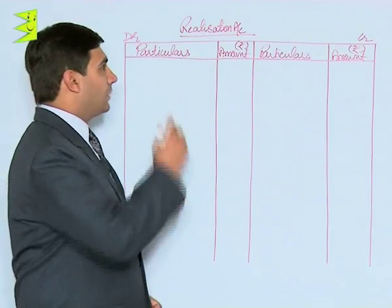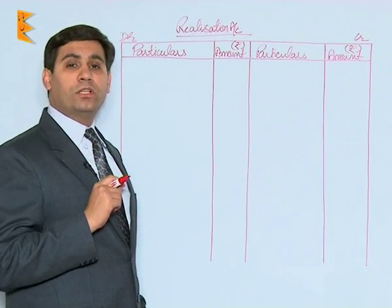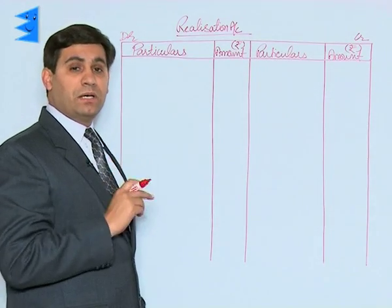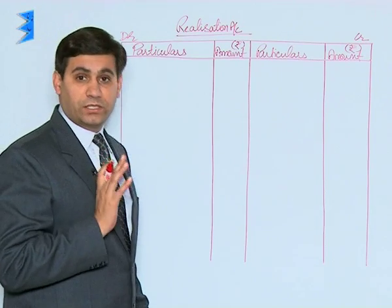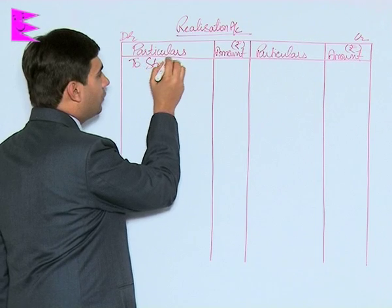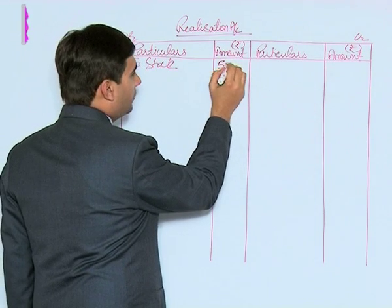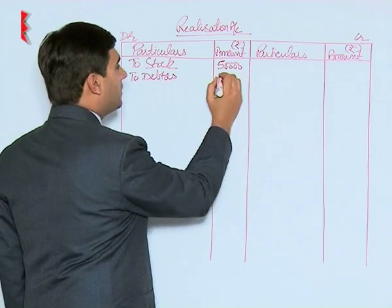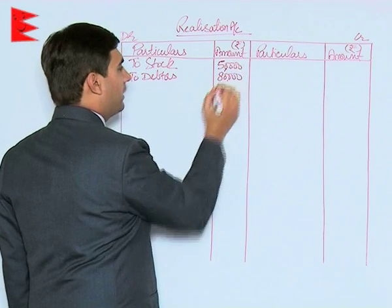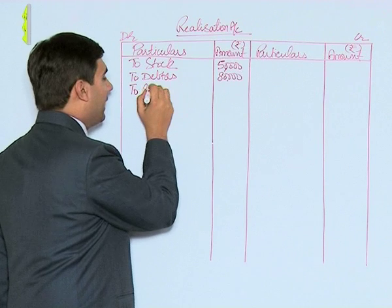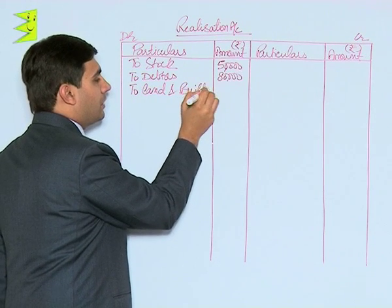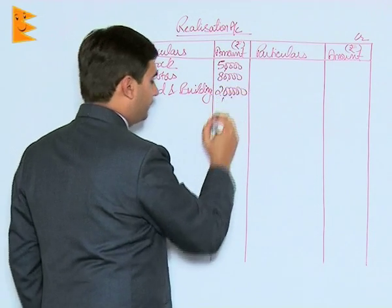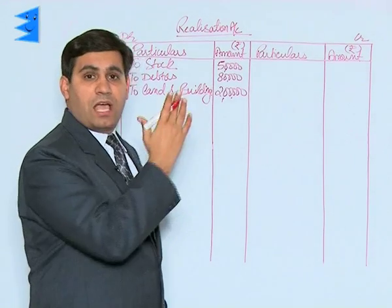Coming to the realization account first: all assets appearing on the asset side of the balance sheet should be transferred to the realization account. Remember, no cash or bank balance should be transferred. We had stock valued at ₹50,000, debtors valued at ₹80,000, and land and building valued at ₹2 lakh — all transferred to the debit side of the realization account.